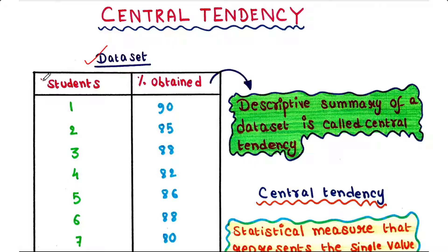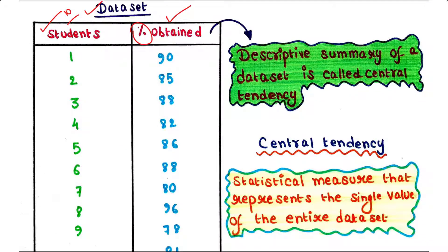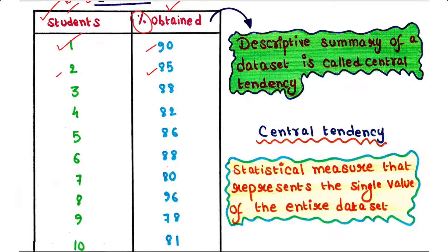So in this column we have 10 students, and this column is stating their percentage which they have obtained in the last exam. Suppose this student obtained 90 percent, this student obtained 85 percent, like that. Now we can summarize this whole dataset.